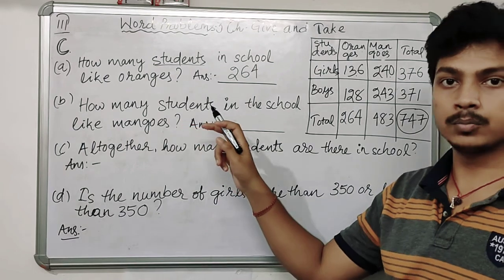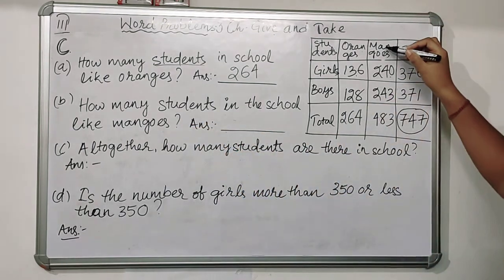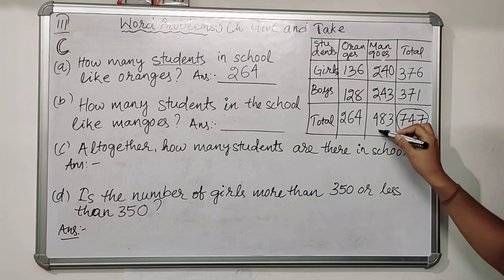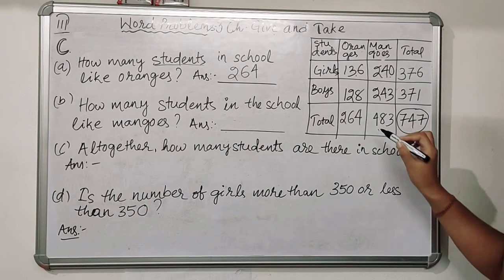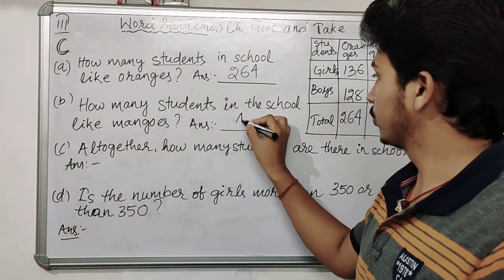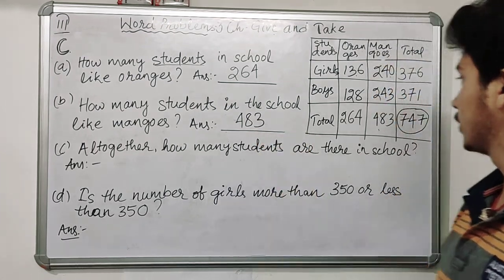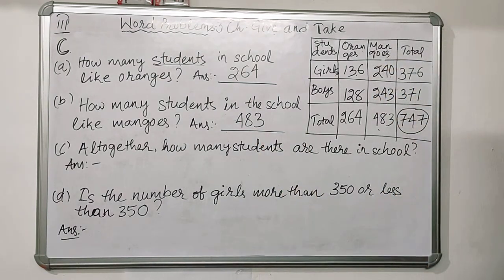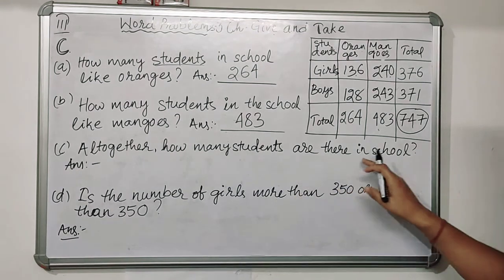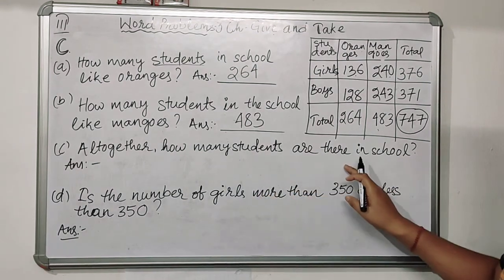Question B: how many students in the school like mangoes? Students means boys and girls both. Looking at the mangoes column, the answer is 483.